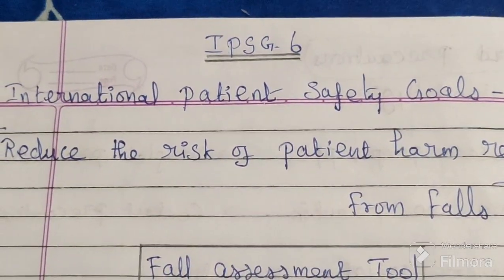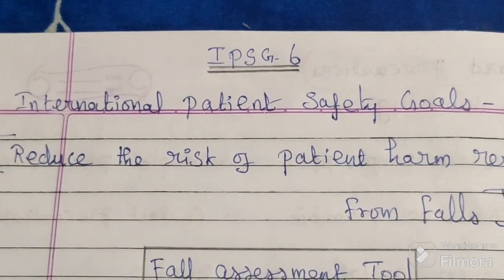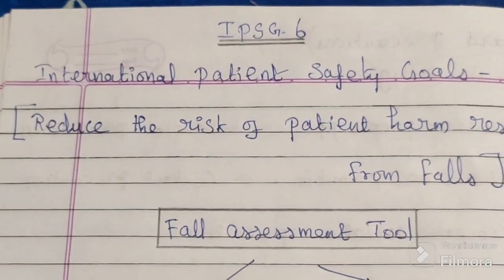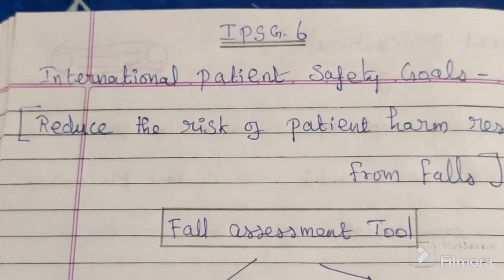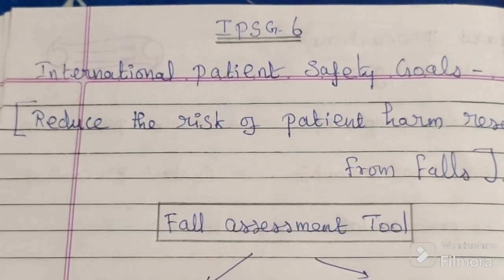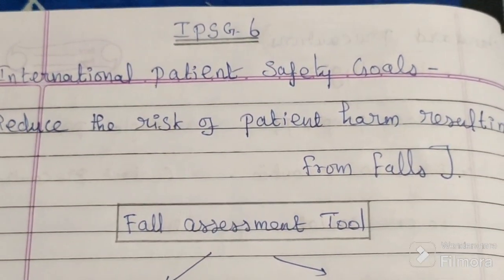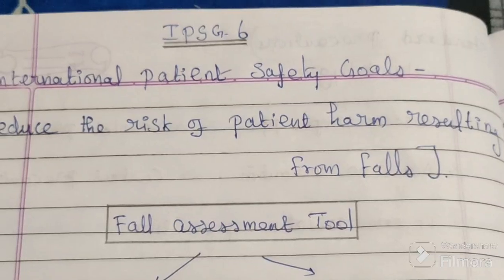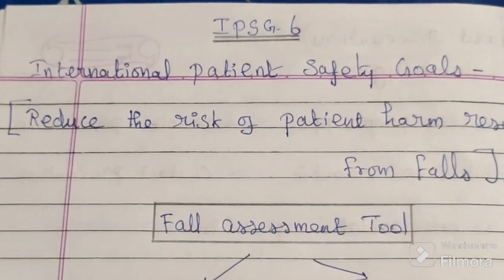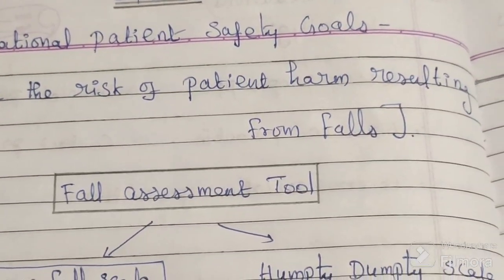The International Patient Safety Goals are: first, identify patient correctly; second, improve effective communication; third, improve the safety of high-alert medication; fourth, ensure correct site, correct procedure, correct patient surgery; fifth, reduce the risk of healthcare-associated infection. Now sixth one is reduce the risk of patient harm resulting from falls.